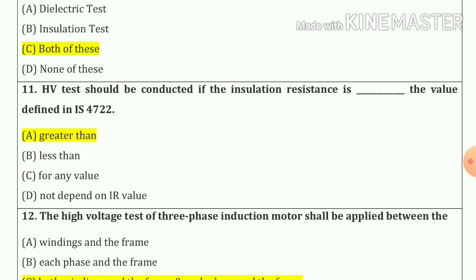Question number eleven: High voltage test, otherwise we can say HV test, should be conducted if the insulation resistance is greater than the value defined in IS 4722.